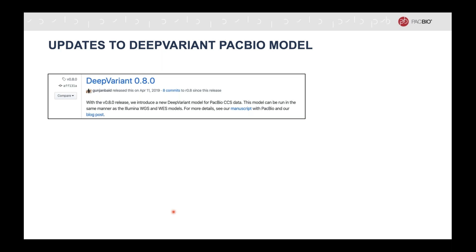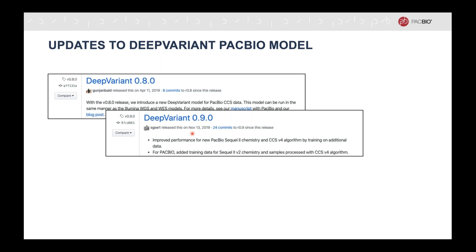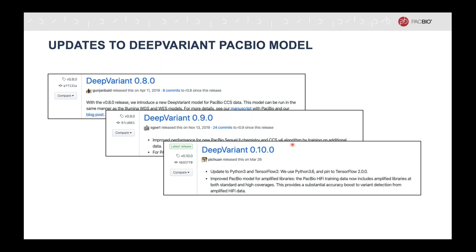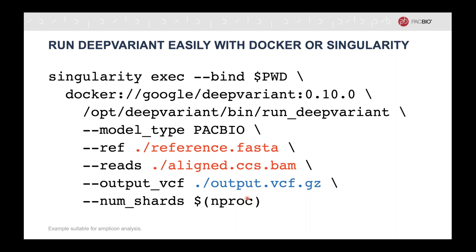In the past year, there have been three releases since the HiFi preprint. Google DeepVariant version 0.8.0 was the first release to have support for HiFi data. With the release of 0.9.0, the model was updated to support the Sequel II version 2 chemistry and also the CCS v4 algorithm. And in March of this year, version 0.10.0 was released with updates to the model to support calling variants from amplicons. It's also become very easy to run DeepVariant. With Singularity or Docker, you can go from an aligned BAM to an output VCF running just a single command without installing any other dependencies other than Singularity. The example on the slide should work for amplicons or for a small genome, though you might need to customize it for whole genome sequencing or larger genomes.